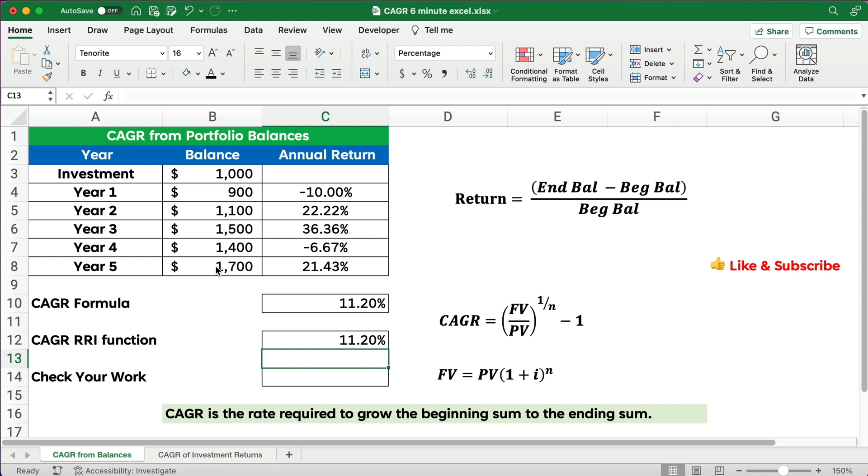Now let's check our work. Now what is compounded annual growth rate, or CAGR? It's the rate required to grow the beginning, 1,000, to the end, 1,700. Now, it assumes the same amount each year. It's as if we took these rates and put in 11.2, 11.2, 11.2 for every year. So let's check our work here. So here's our formula.